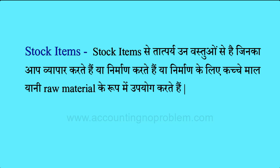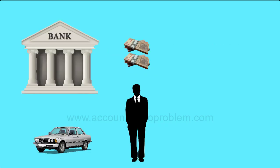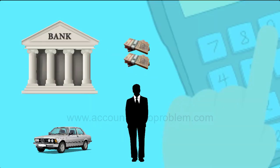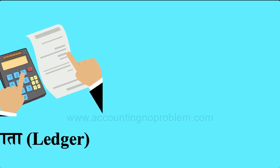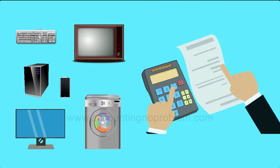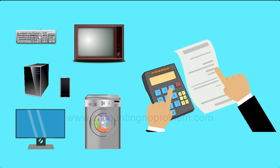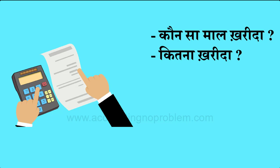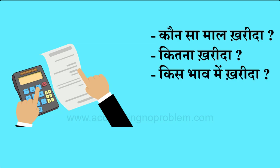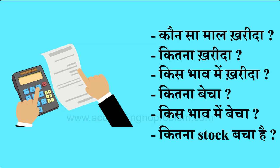हमने manual accounting की process में बताया था कि व्यापार में हमें किसी का भी account यानि हिसाब किताब रखने के लिए उसका खाता यानि ledger बनाना होता है। ठीक उसी तरह हम जिन वस्तुओं का व्यापार करते हैं उनका भी हिसाब रखना होता है। हिसाब रखने से ही हमें जानकारी मिलती है कि कौन सा माल खरीदा, कितना खरीदा, किस भाव में खरीदा, कितना बेचा, किस भाव में बेचा, कितना स्टॉक बचा है। यही कारण है कि हम ledgers की तरह ही stock items भी बनाते हैं।